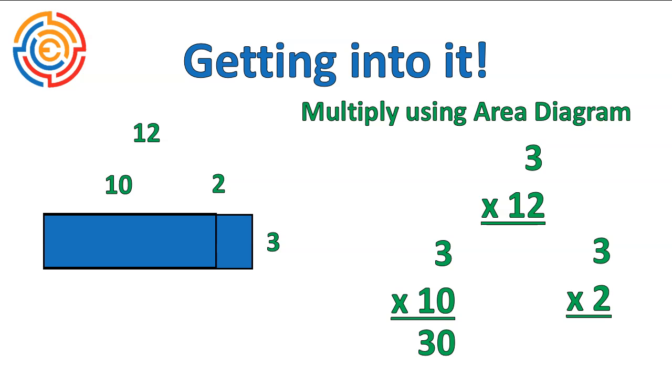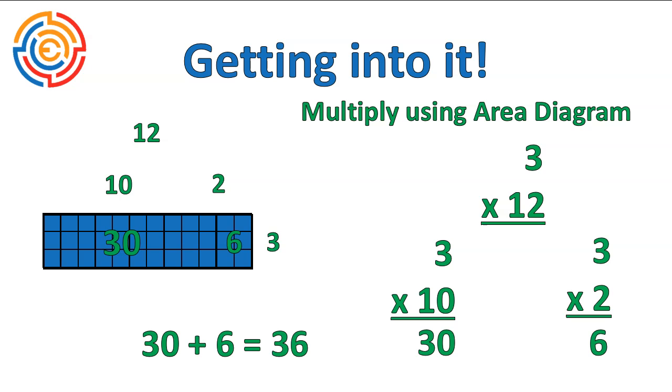So let's talk about what we would actually get here. We'd be 3 times 10 is 30. 3 times 2 is 6. So those could go in here. The area of this section is 30, and the area of this section is 6. Remember, that's how many squares we're covering before, but now we don't tend to draw in all of those squares as we work. And then we would add up those two areas to get our final answer of 36.